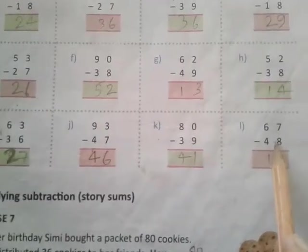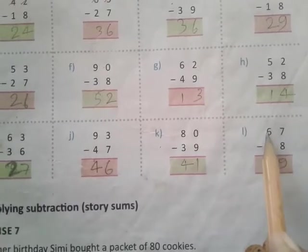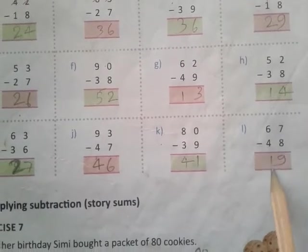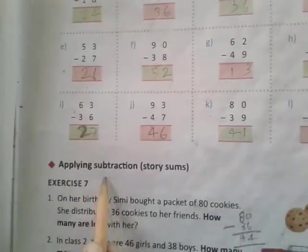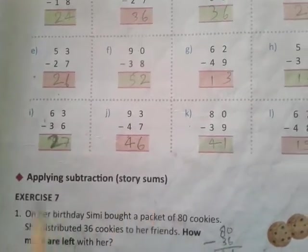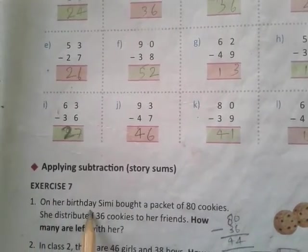80 subtract 39. 10 subtract 9 is 1, 7 subtract 3 is 4, equals 41. L: 67 subtract 48. 17 subtract 8 is 9, 5 subtract 4 is 1, equals 19. Applying Subtraction Story Sums.